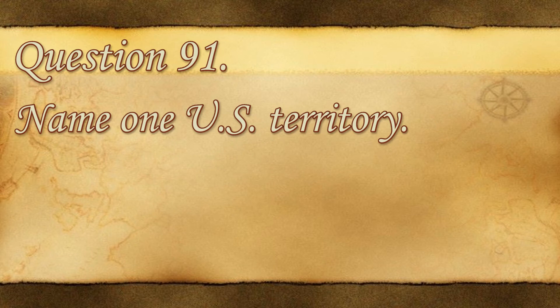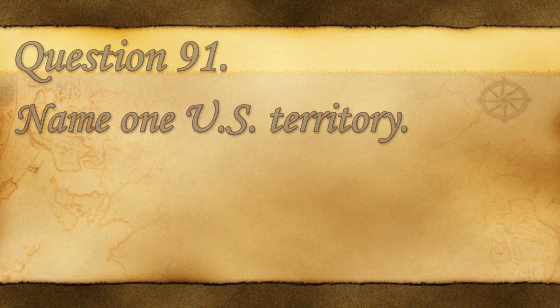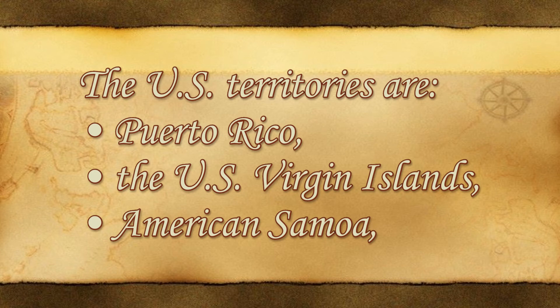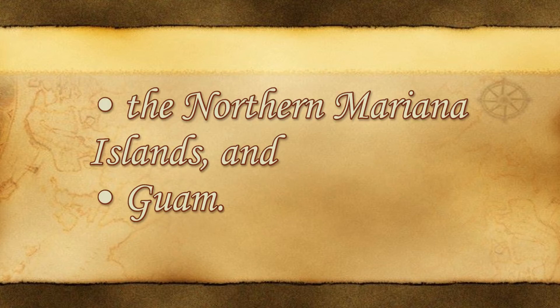Question 91: Name one U.S. territory. The U.S. territories are Puerto Rico, the U.S. Virgin Islands, American Samoa, the Northern Mariana Islands, and Guam.